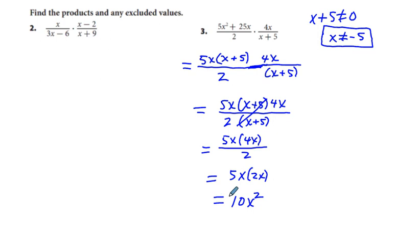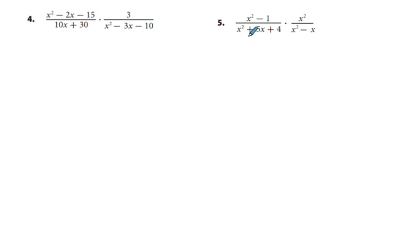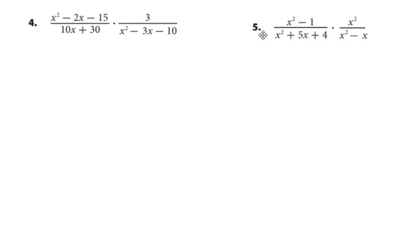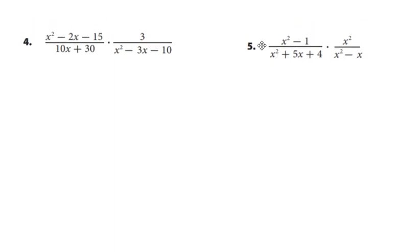And we have our excluded value. That's it. Next, problem 5. We have x squared minus 1 over x squared plus 5x plus 4, times x squared over x squared minus x. The first thing I'm going to do is obtain excluded values. We know that x squared plus 5x plus 4 cannot be equal to 0.